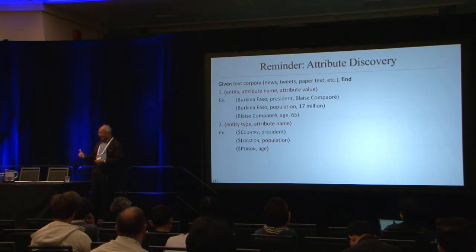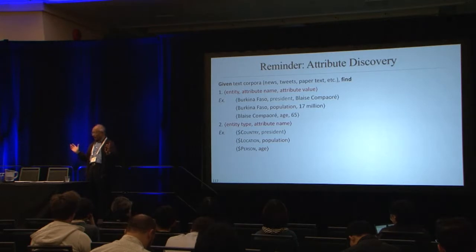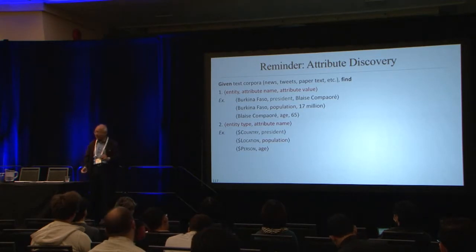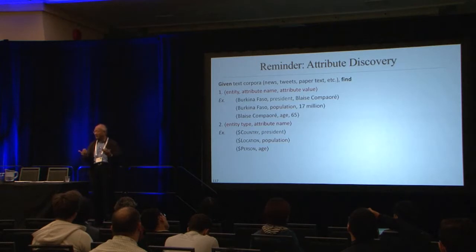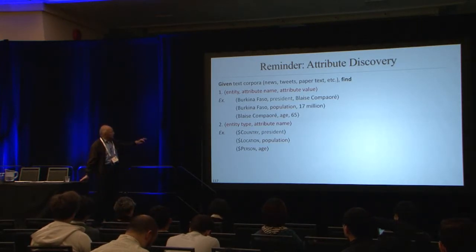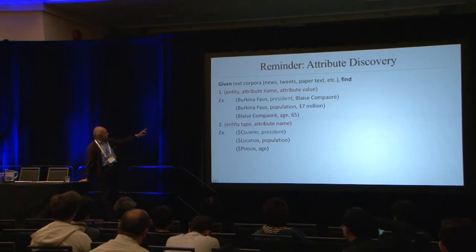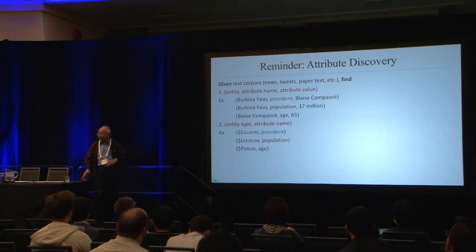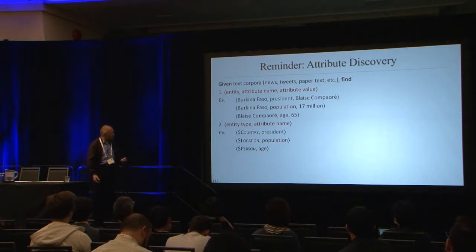Meng Jiang's paper did not solve all these problems — in fact, just last night he sent out another paper further refining the solution. The key is: you have a huge corpus and you want to mine entity, attribute name, and attribute value using frequent patterns. But you need to generalize them into types, so that types and patterns can mutually enhance each other.